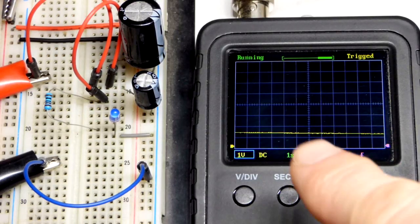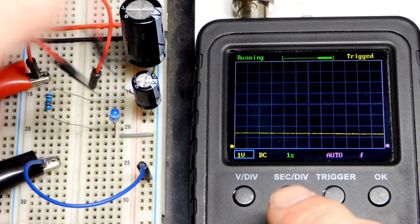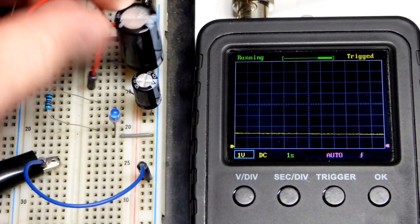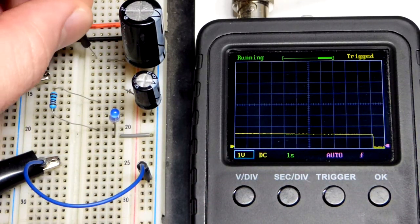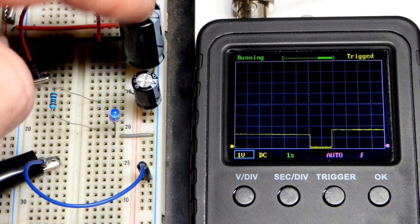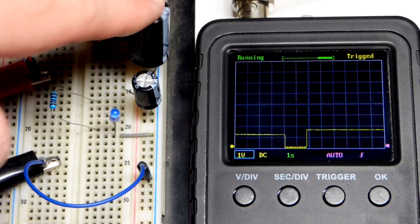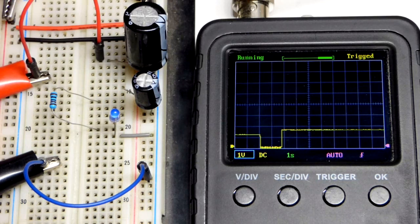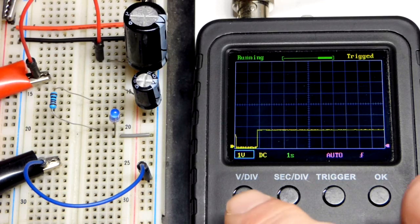That was kind of a quick review of what we did in the last video. For this video, our goal is to compare what we just saw there with the 100 microfarad capacitor to the 1,000 microfarad capacitor. So it stores about 10 times as much charge per volt.